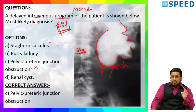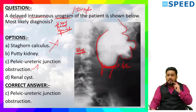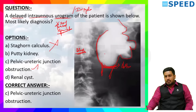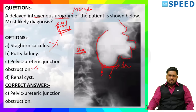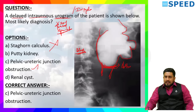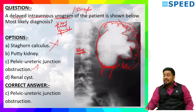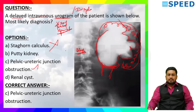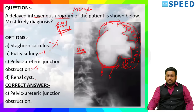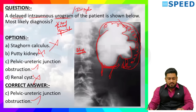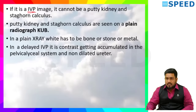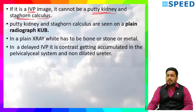Why not putty kidney? In putty kidney, the entire kidney will be white — it will be a cemented kidney. It is not a renal cyst either. Hence the correct answer is pelvi-ureteric junction obstruction. Cheat code: if it is an IVP image, it cannot be a putty kidney or staghorn calculus. Putty kidney and staghorn calculus are seen on a plain radiograph KUB. In a plain X-ray, white has to be bone, stone, or metal. In a delayed IVP, it is contrast accumulating in the pelvi-ureteric junction system.